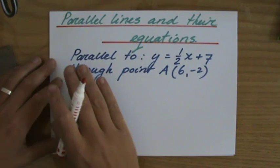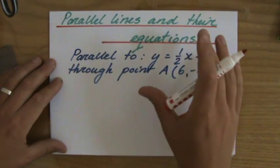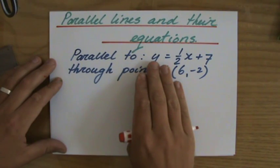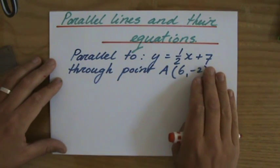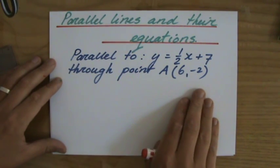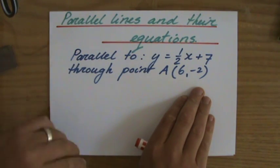The question is: construct the equation of the line which is parallel to y equals a half x plus 7 and goes through point A with the coordinate 6, minus 2. Please put it on pause now, try it yourself, and then you can continue and look at me.